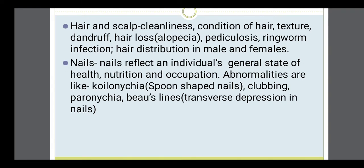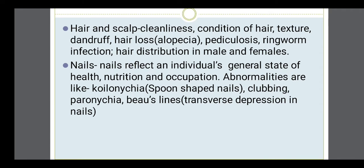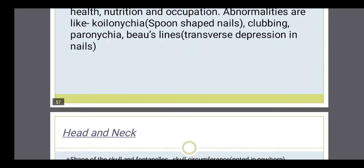Next step is the condition related to hair and scalp. In that: cleanliness, condition of the hair texture, dandruff, hair loss, pediculosis, ringworm infection of the scalp, and hair distribution in males and females — because this will also show the health of the patient. Then nails. Nails reflect the individual's general state of health, nutrition status, and occupation. Abnormalities include koilonychia, which is due to iron deficiency anemia; clubbing, which is seen in respiratory disease and chronic bronchitis; and transverse depressions in nails.